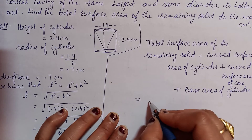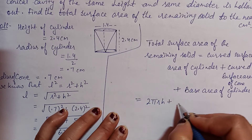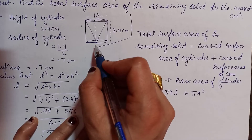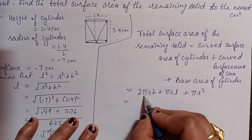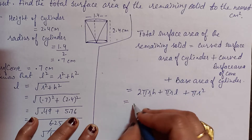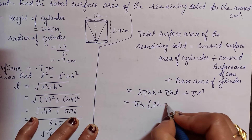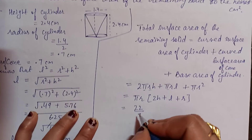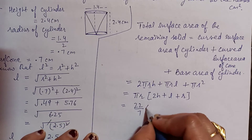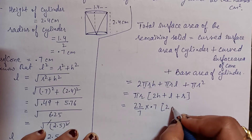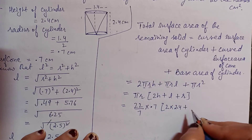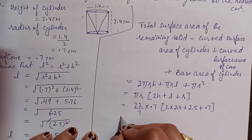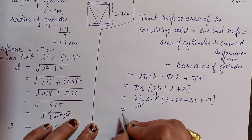So total surface area = 2πrh + πrl + πr². Taking π and r common: πr(2h + l + r). Using π = 22/7, r = 0.7, h = 2.4, l = 2.5, r = 0.7. After cancellation: 22/7 × 0.7 gives 2.2.